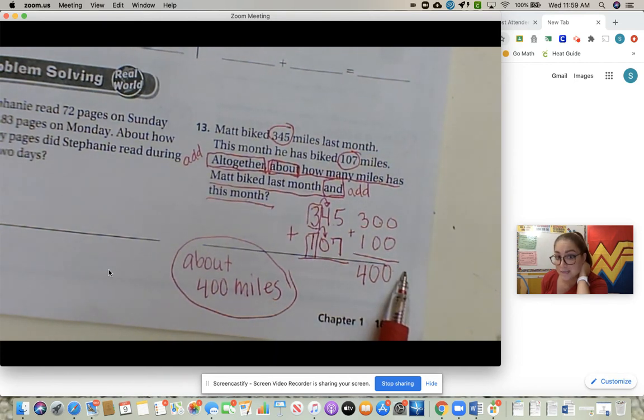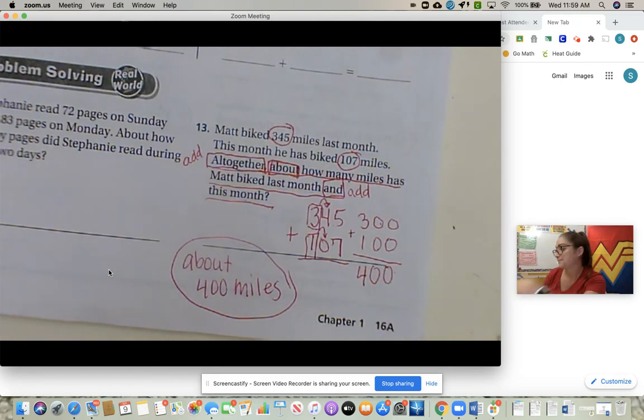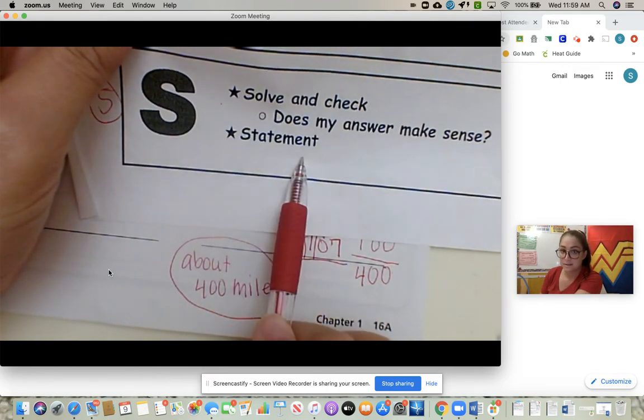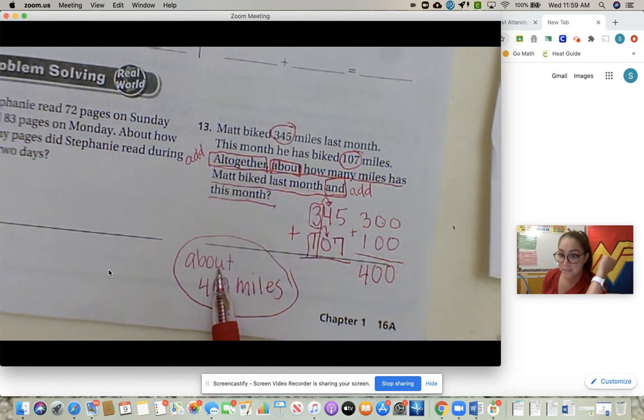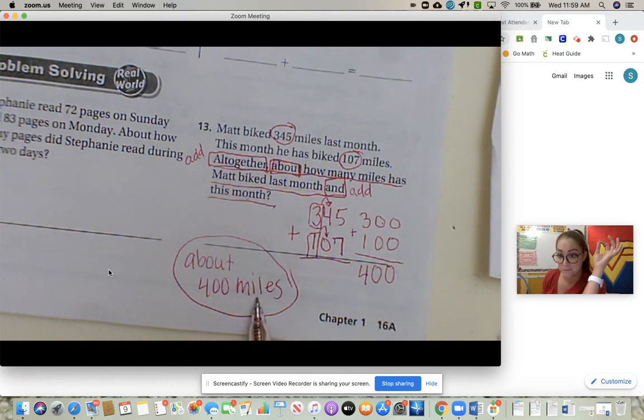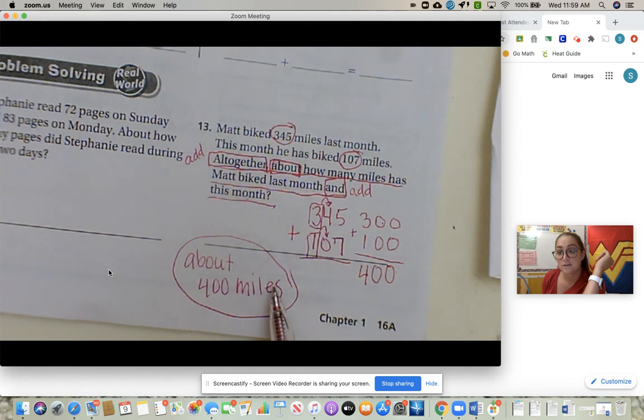I then need to write my statement. We will get better and better at this, but right now we can just write 'about' because we don't have exact, we have about. We rounded. About 400 miles. You need to write miles because what could it be? 400 what? 400 ice cream cones? So you need to write what you are looking for. Then you will finish the rest for homework.